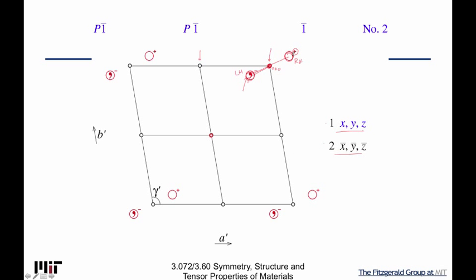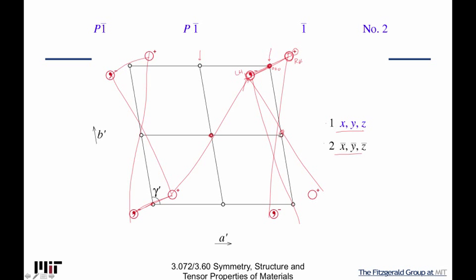If I put an inversion center here to invert this, and put an inversion center to invert this, I need one in the center to invert that. As you fill out the rest of the motif, this couplet needs to be produced up here. You start to realize there's an inversion point there, and of course there has to be an inversion point going through this middle point. That's why you end up with inversions everywhere. The atom basis is shown over to the right.